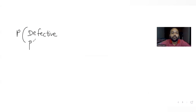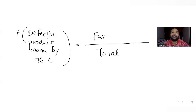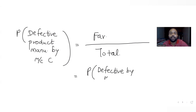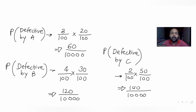Now let's find the probability of a defective product being manufactured by machine C. This is favorable outcomes upon total possible outcomes. Since the bolt picked is already defective, we need the probability of getting a defective product from machine C upon the probability of getting a defective product from any of the machines A, B, or C. The numerator is 100/10,000.